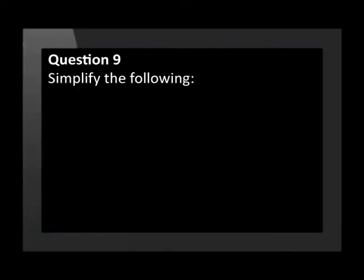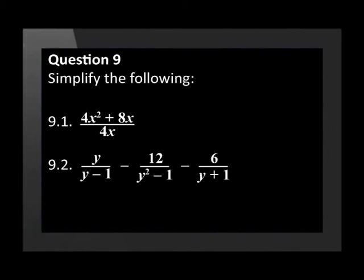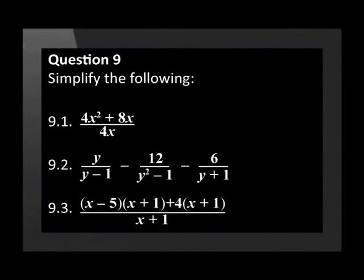The last question. Question 9 asks us to simplify the following. 9.1 is 4x squared plus 8x over 4x. 9.2 is y over y minus 1 minus 12 over y squared minus 1 minus 6 over y plus 1. 9.3 is x minus 5 times x plus 1 plus 4 times x plus 1 over x plus 1.